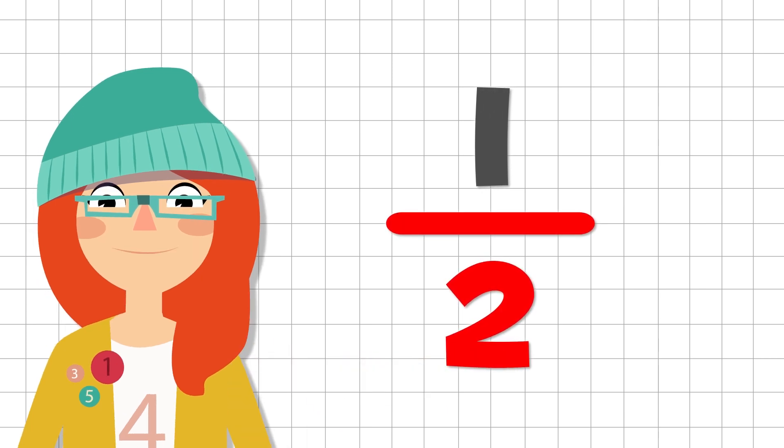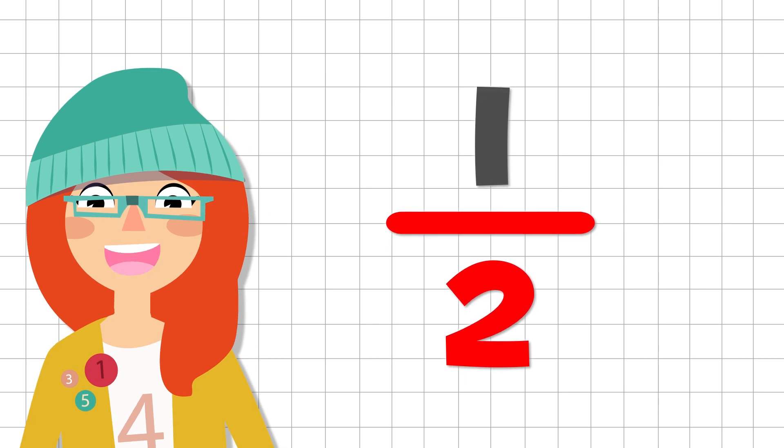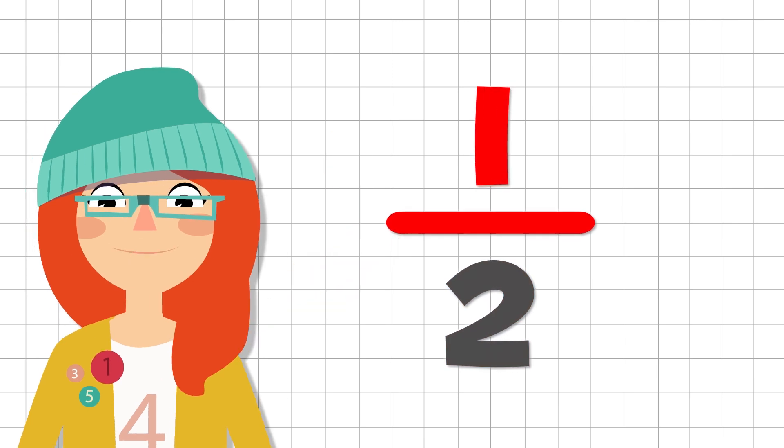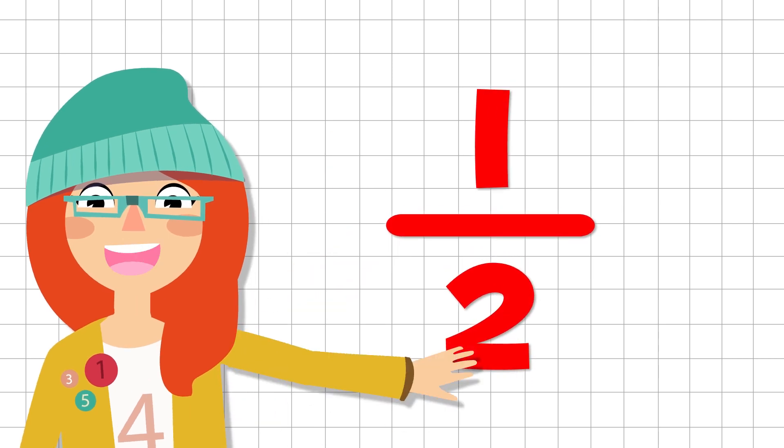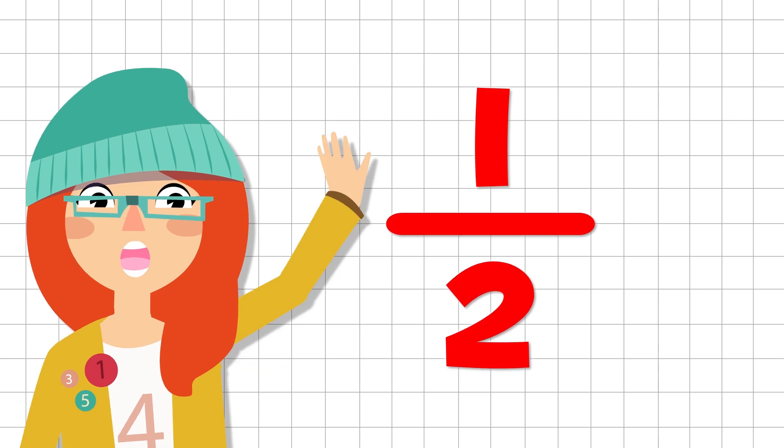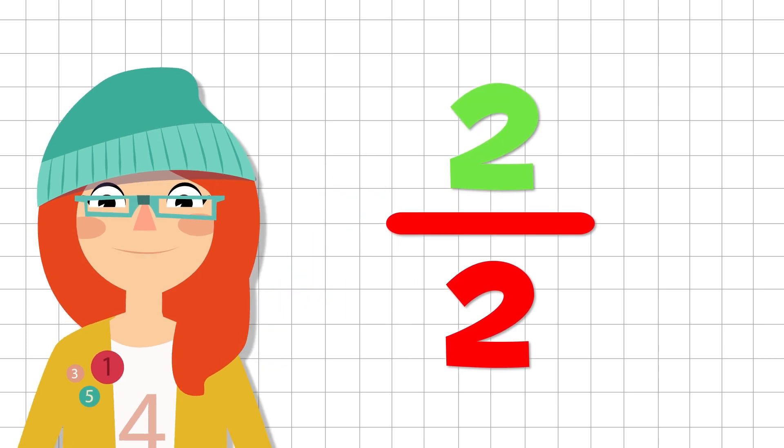When the denominator is a two, we say half. So we would read this fraction as one half. One for the numerator and half for the denominator. If we change the numerator for a two, we would read the fraction as two halves. Easy, right?